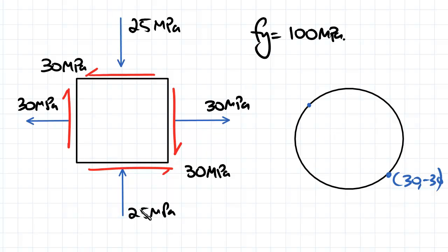And then if we have a look at the bottom side here, we've got a compression stress here of 25 MPa, that's going to be negative. And then we've got an anti-clockwise rotation caused by our shear stress here, so this is going to be negative 25, 30.